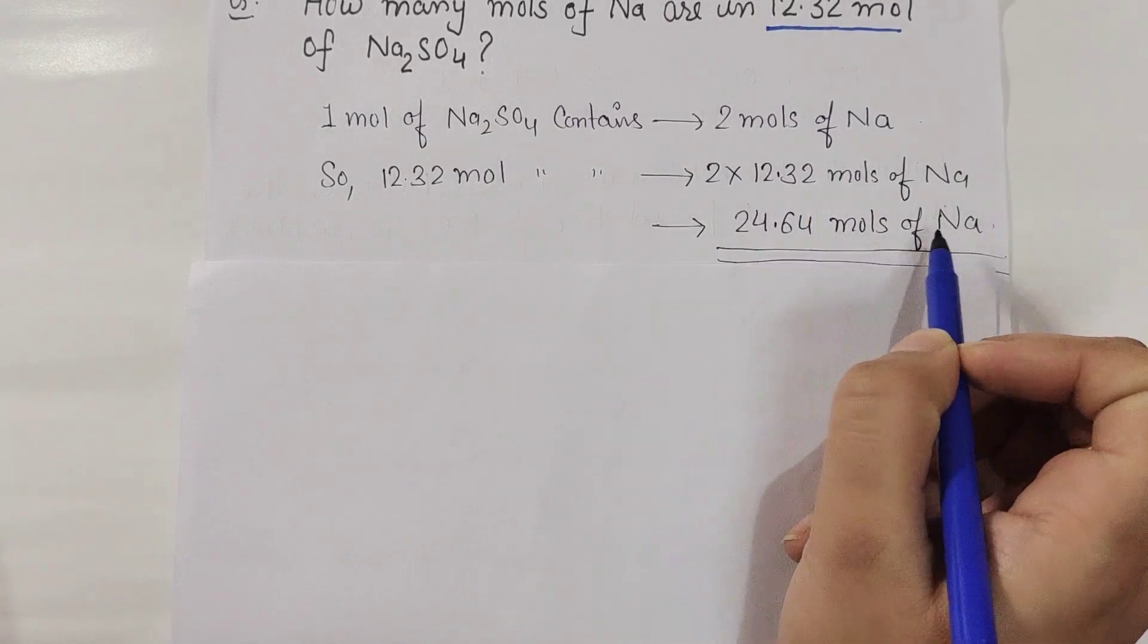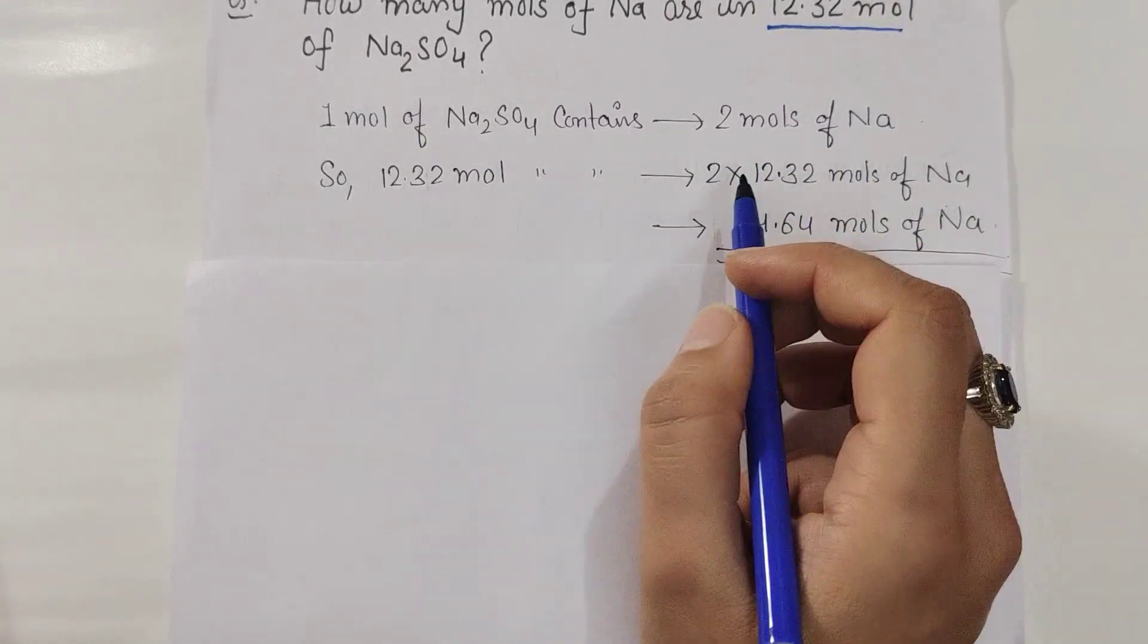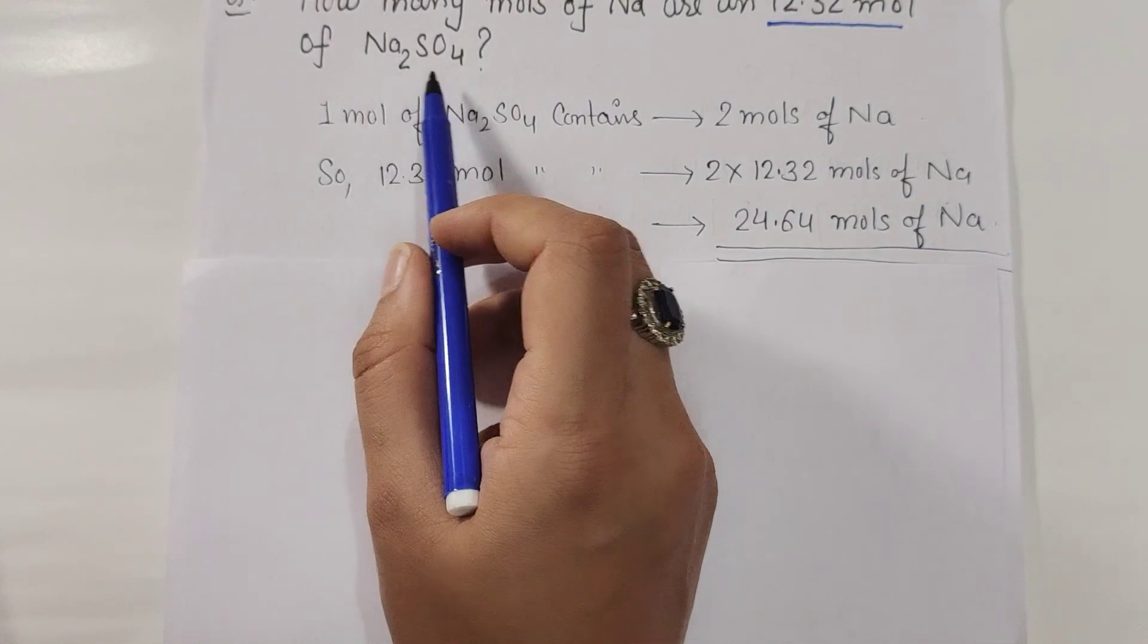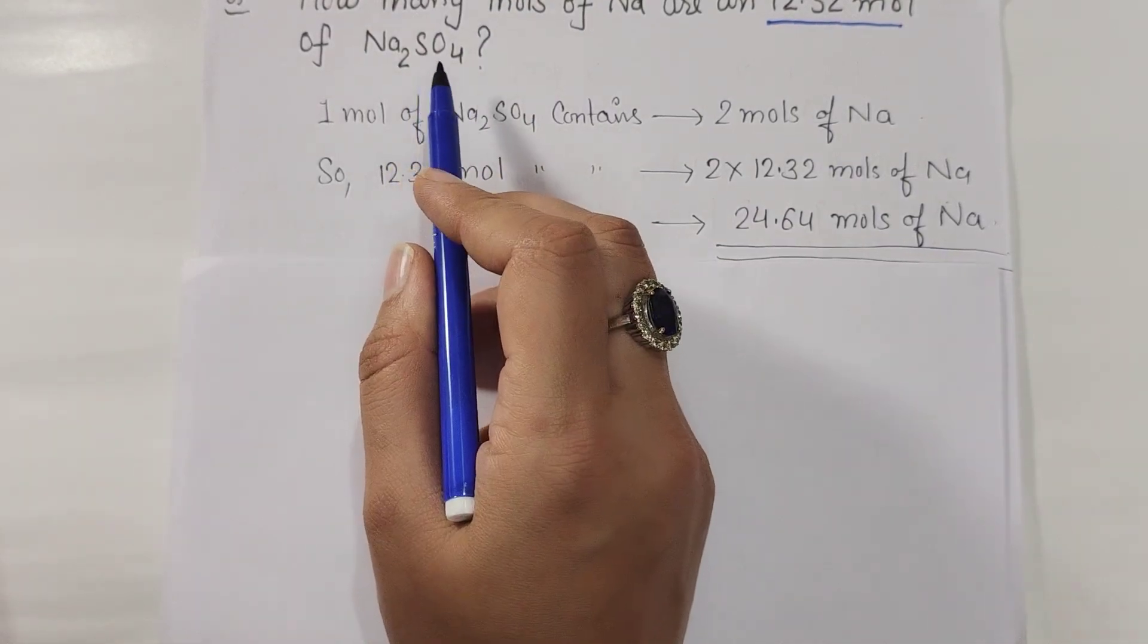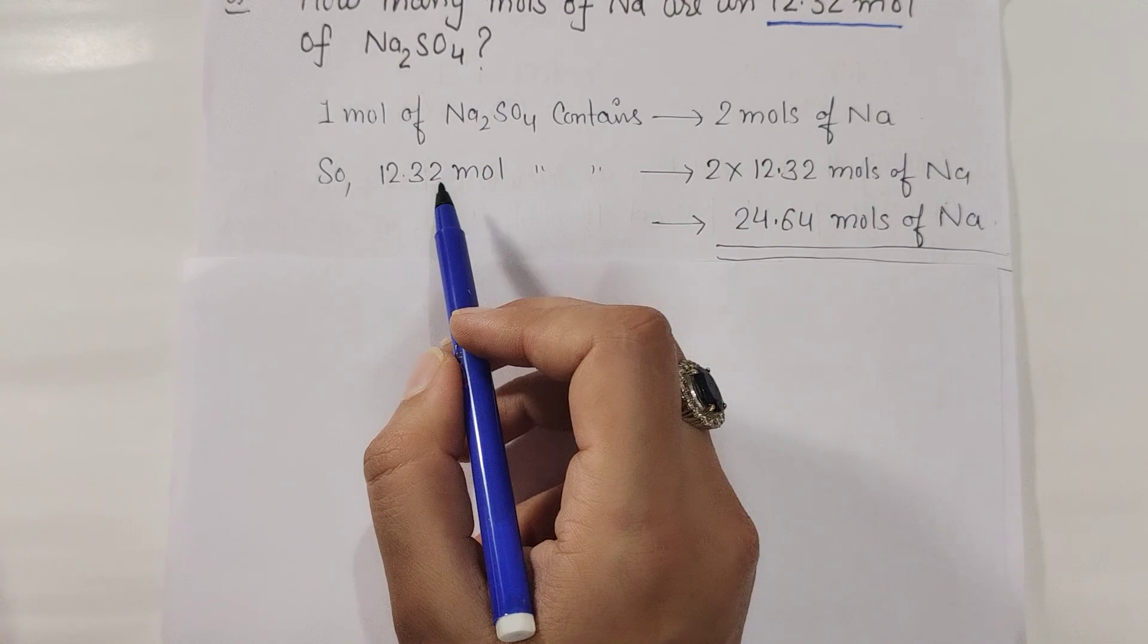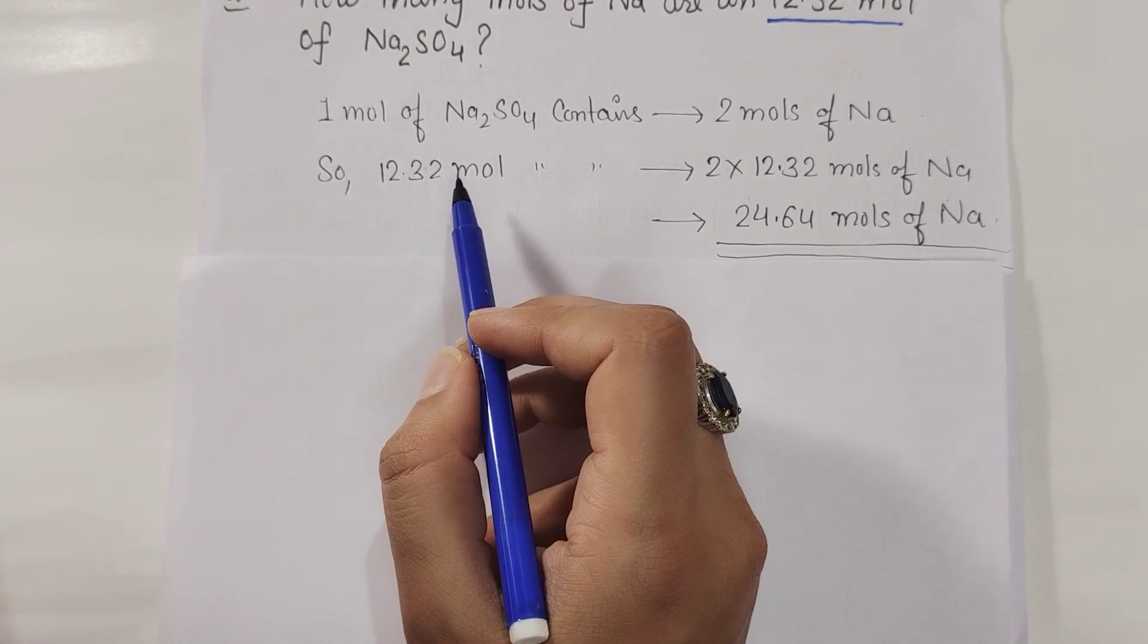So in this type of question, you have to know from this formula how many moles are present in 1 mole and how many moles are given, then multiply directly.